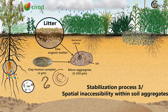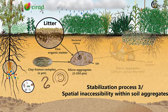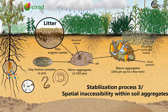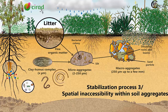Soil microaggregates are then bound together with sand particles, decaying roots and leaves, and bacterial colonies, in a second level of aggregation called macroaggregation.